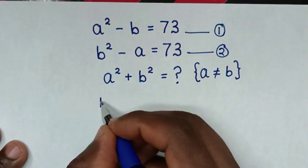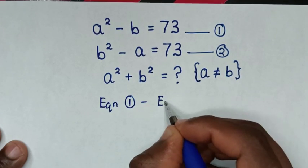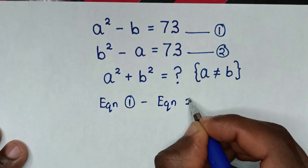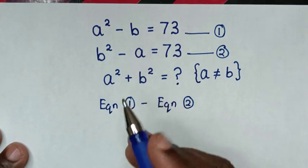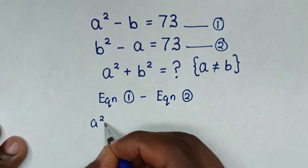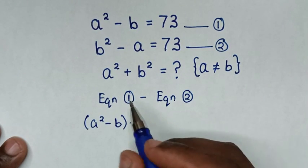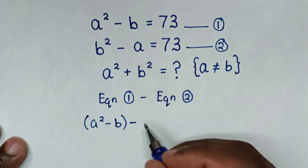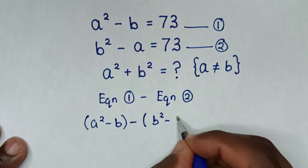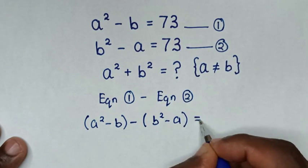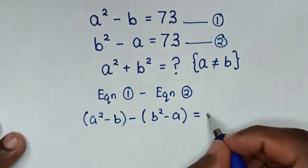We will take equation 1 and minus equation 2. From equation 1, the left side is A squared minus B. Then minus equation 2, whose left side is B squared minus A. So bracket B squared minus A bracket is equal to 73 minus 73, which is 0.